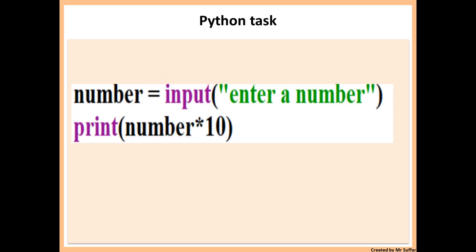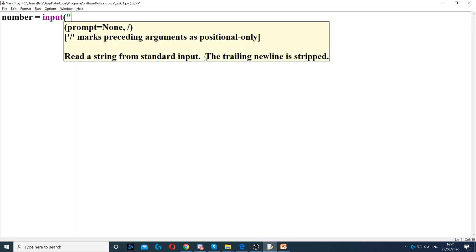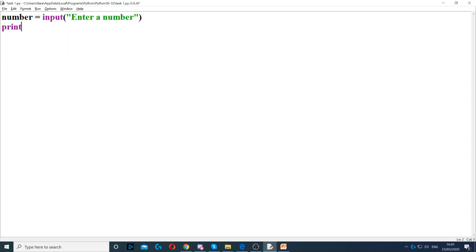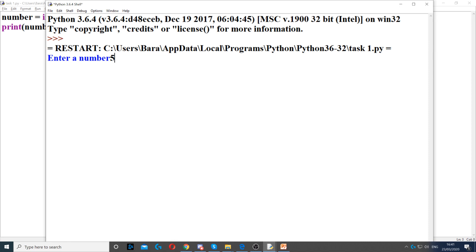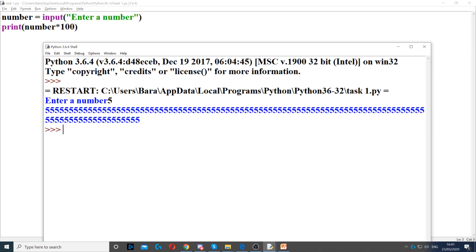And now here we have an example of why we use data types. So for example, if I'm asking for a number - enter a number - and I will display that number times, say, 100. If I run this and type 5, you expect 500.